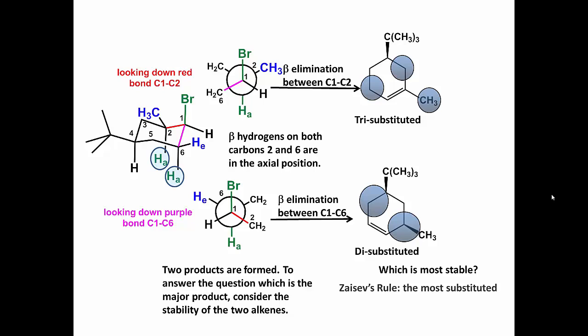Remember Zaitsev's rule: the most substituted alkene is the most stable. The tri-substituted alkene is the major product.